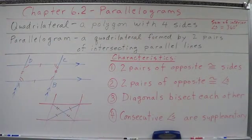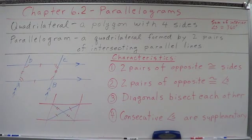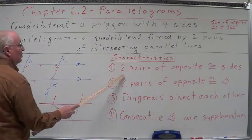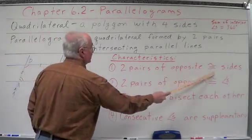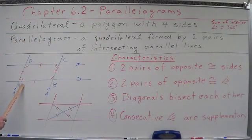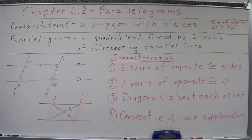Parallelograms have four characteristics. All parallelograms have these; if they do not have these, they are not parallelograms. We're going to get into the test of parallelograms — very, very important. Number one: they have two pairs of opposite congruent sides. Segment AB is congruent to segment DC.